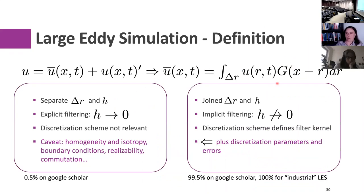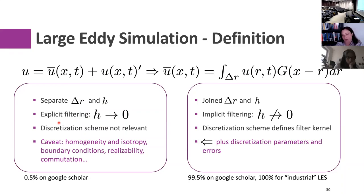Deriving LES equations is mathematically simple: apply a low-pass filter with some filter kernel to get a coarse-grained solution. There are at least two flavors. The first is explicit filtering, where you separate your filter width from your discretization size H. You can then do convergence under the filter — H towards zero — making the discretization not critically relevant, just controlling how fast you converge under the filter.